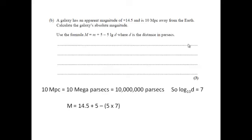Now we can just plug in the numbers. So big M equals little m, which is 14.5 plus 5 minus 5 times 7. So that's 19.5 minus 35, which is minus 15.5.